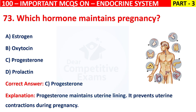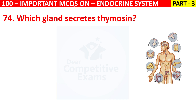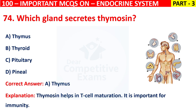Question 74: Which gland secretes Thymosin? Your options are Thymus, Thyroid, Pituitary, or Pineal. The correct answer is A, that is Thymus. Thymosin helps in T cell maturation. It is important for immunity.